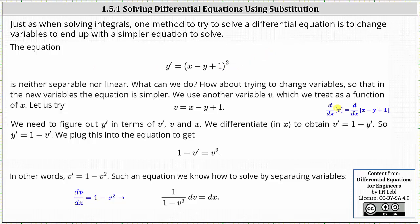The derivative of v with respect to x is v prime. The derivative of x with respect to x is one. The derivative of y with respect to x is y prime, and the derivative of one with respect to x is zero. This gives us v prime equals one minus y prime.